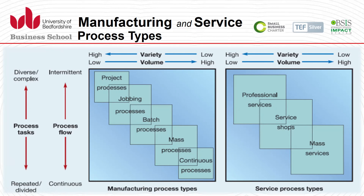Looking at the different types applicable in manufacturing versus service organizations: the key process design types can be seen from a variety and volume point of view. High variety and low volume, or high volume and low variety — these dimensions differentiate the types. In manufacturing, there are five types based on the task and flow, ranging from diverse and intermittent to repetitive and continuous, and this depends on the nature of the business.